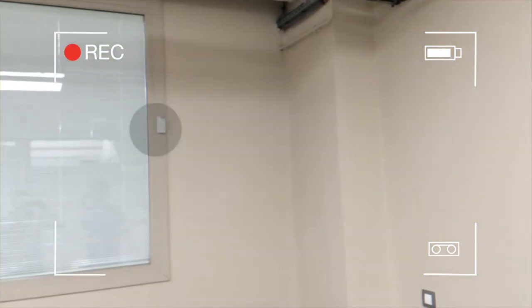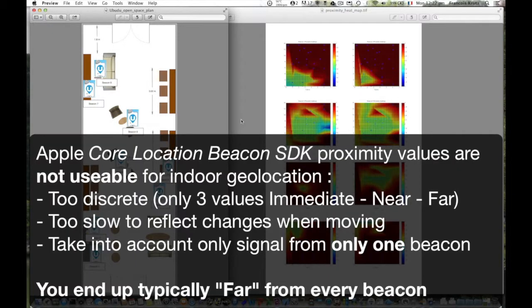How does it work? We didn't use the Apple core location. The values are too discrete, they are too slow. You typically end up with far from every beacon so it's not really helpful.